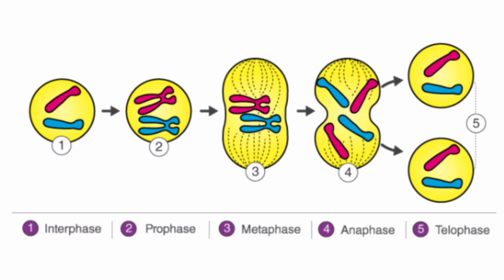In the last stage of mitosis, called Telophase, two new nuclei form at the poles of the cell, each containing four chromosomes. The cytoplasm starts to divide to produce two daughter cells. Both daughter cells have a copy of each chromosome from the parent cell. The spindle breaks down and a new nuclear membrane forms around each set of chromosomes.